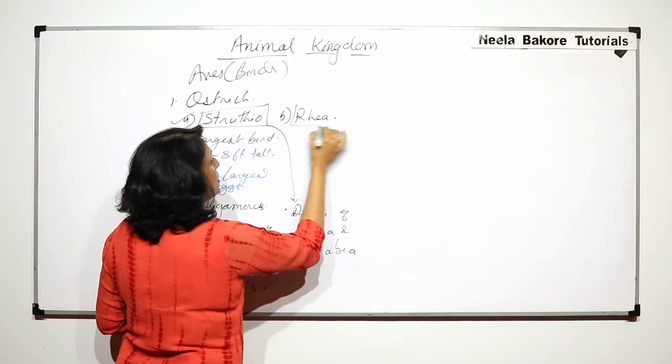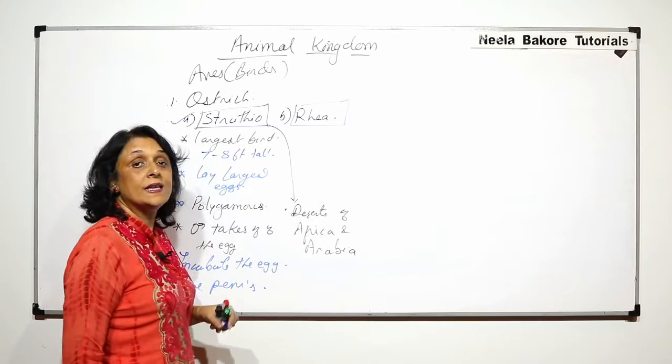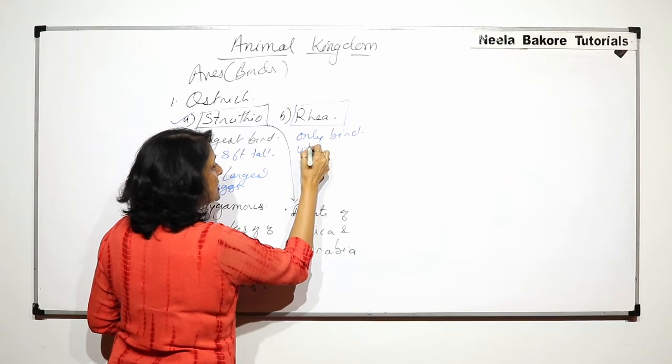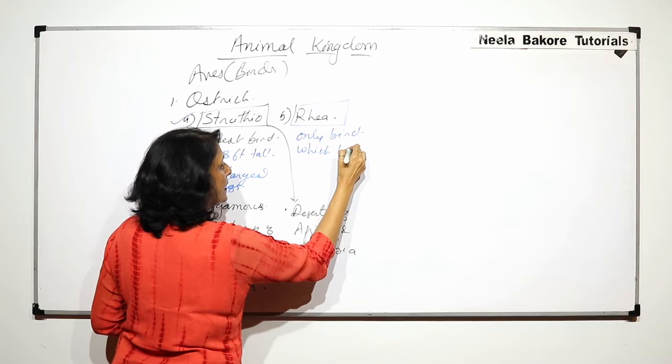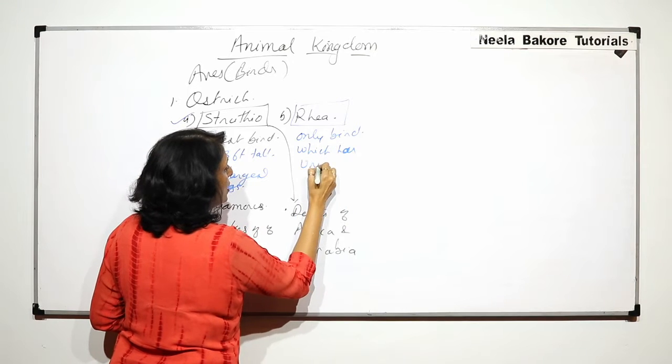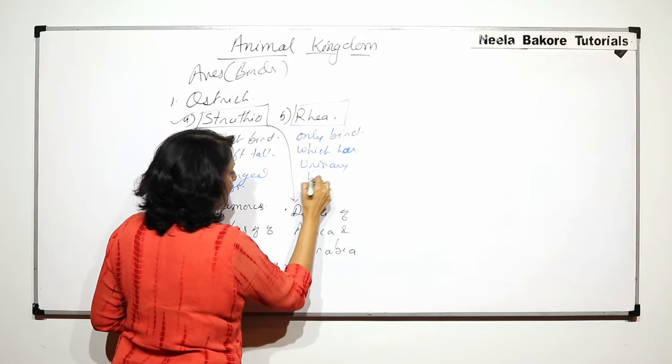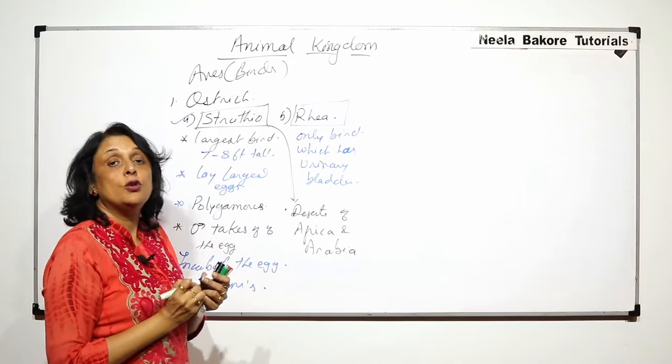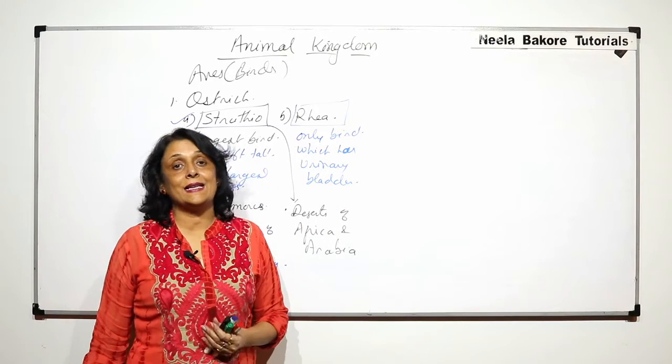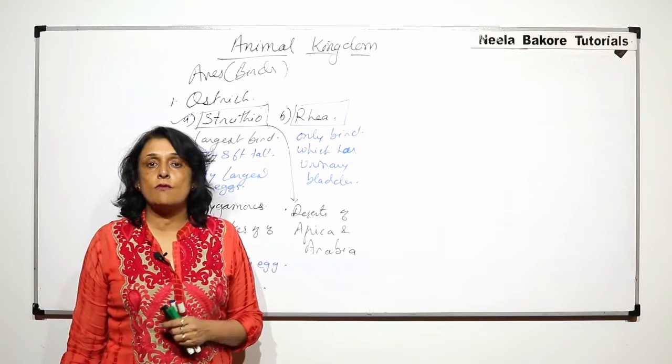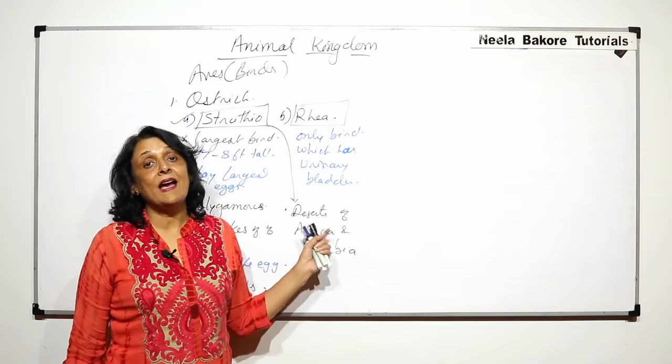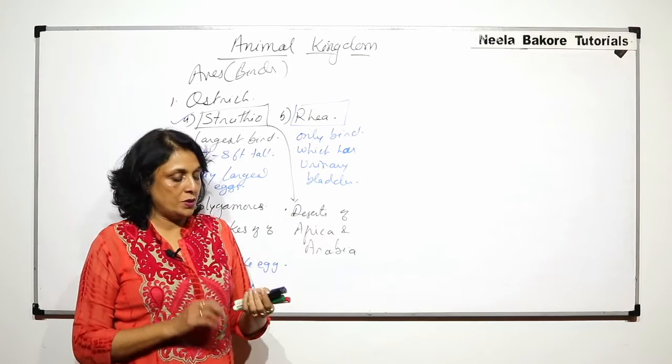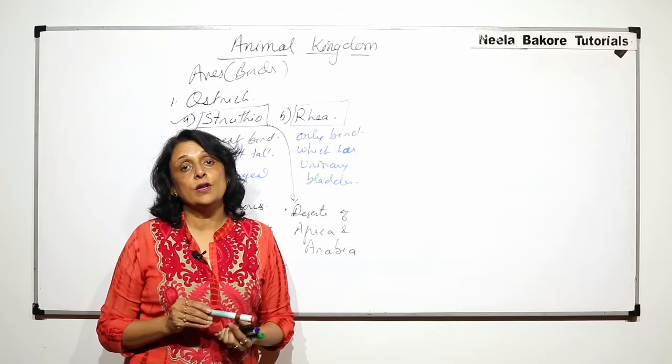If we talk about Rhea, this is the only bird which has urinary bladder. Birds are uricotelic. They excrete uric acid because they have to conserve water and they have cloaca, but Rhea, which is one of the ostriches, it has urinary bladder.